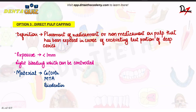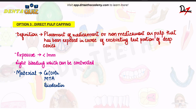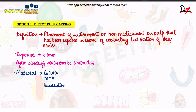Direct Pulp Capping, or DPC, is defined as the placement of a medicament or even a non-medicament on the pulp that has been exposed in the course of excavating the last portion of deep caries. One important point to note is that the pulp exposure should be less than 1 mm and there should be light bleeding which can be controlled.